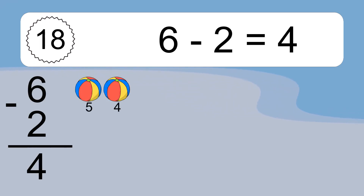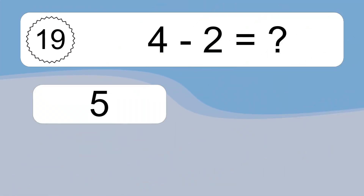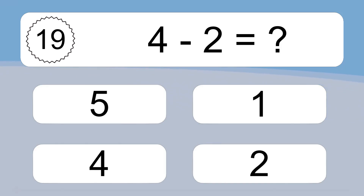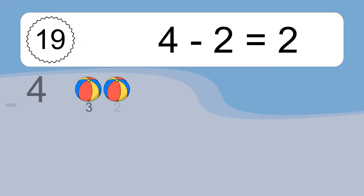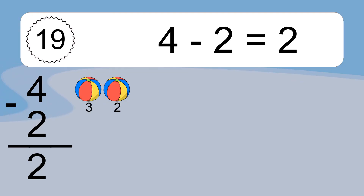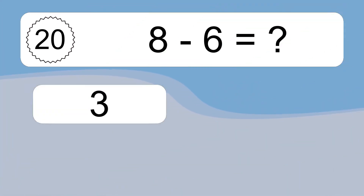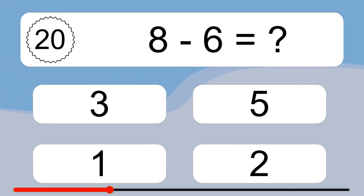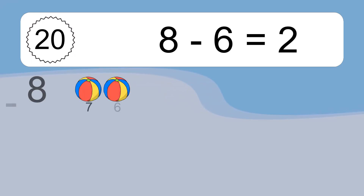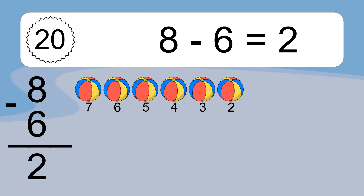Six minus two equals what? Six minus two equals four. Let's count it: five, four. Four minus two equals what? Four minus two equals two. Let's count it: three, two. Eight minus six equals what? Eight minus six equals two. Let's count it: seven, six, five, four, three, two.